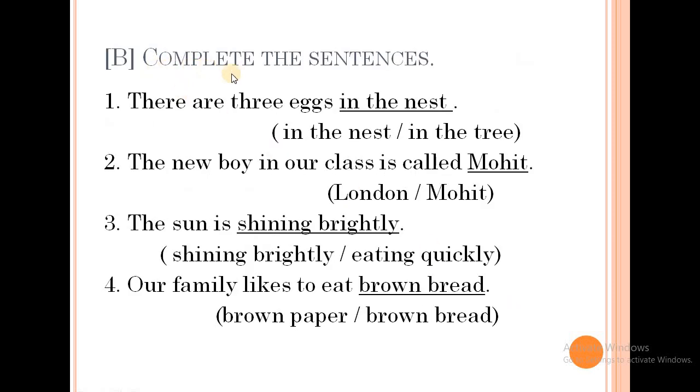Exercise B. Complete the sentences. Here in the bracket, two options are given. From those, you have to choose the correct answer and complete the sentences. There are three eggs in the nest. The new boy in our class is called Mohit.